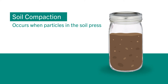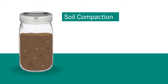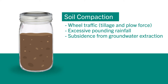Soil compaction occurs when particles in the soil press together and pore space is reduced. Compaction occurs primarily from wheel traffic and equipment use like tillage and plow force. You can also have soil compaction from excessive pounding rainfall, subsidence from groundwater extraction, and excessive sodium, where sodium helps deflocculate your soil causing a loss of soil structure.